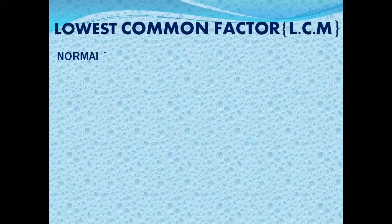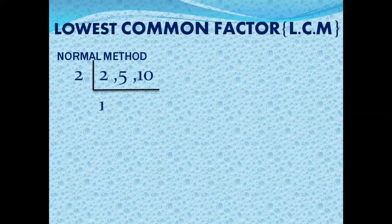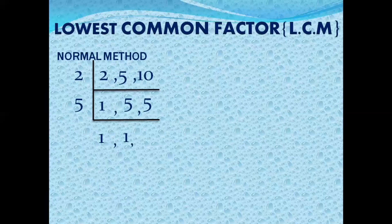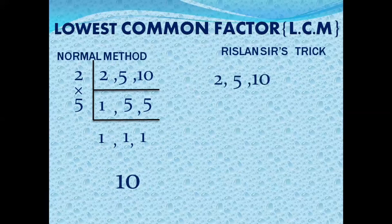Next question: LCM of 2, 5, and 10. Normal method — divide by 2: 2 becomes 1, 5 remains, 10 becomes 5. Move to 5: 5 becomes 1, and 5 becomes 1. Multiply 2×5 = 10. According to my method: largest number is 10. Can 10 be divided by 2? Yes. Can 10 be divided by 5? Yes. Both divide, so LCM is 10.